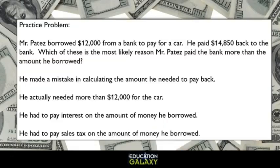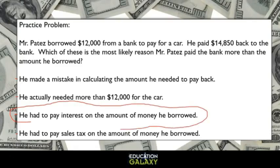Mr. Potez borrowed $12,000 from the bank to pay for a car. He paid $14,850 back to the bank. Which of these is the most likely reason Mr. Potez paid the bank more than the amount he borrowed? The answer choices are: he made a mistake in calculating the amount he needed to pay back; he actually needed more than $12,000 for the car; he had to pay interest on the amount of money he borrowed; or he had to pay sales tax on the amount of money he borrowed. Well, when you borrow money, you don't just pay back the amount you borrowed — you have to pay interest. Therefore, Mr. Potez must have needed to pay interest on top of what he borrowed, making the amount he paid more than the $12,000. So this must be the right answer.